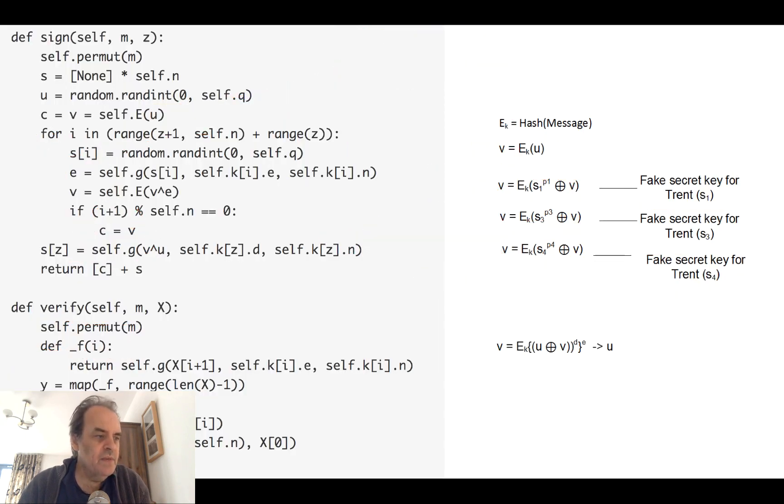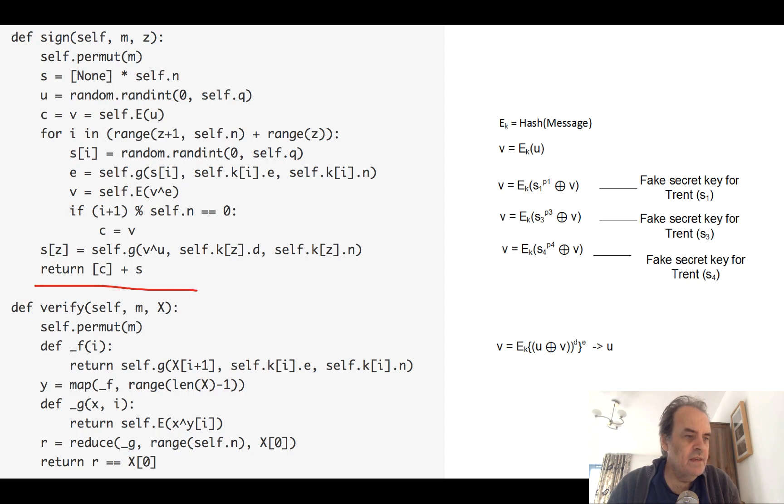On the other side, when we verify it, again we generate the encryption key. And then what we do is that we do the same as we did on the other side. This time we're going to use all the public keys. So that's a public key there and all of those are the public keys.